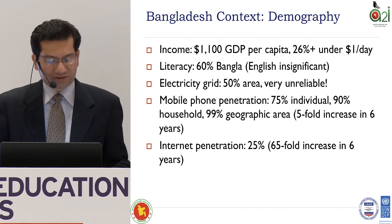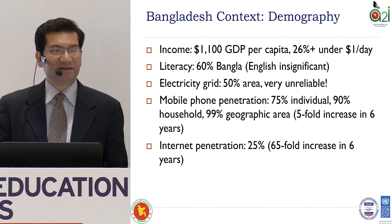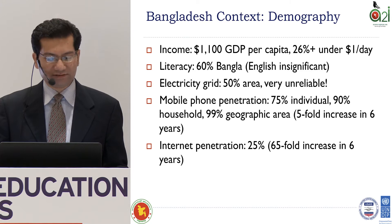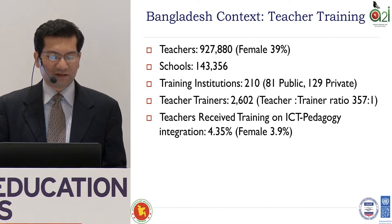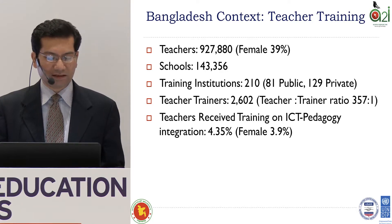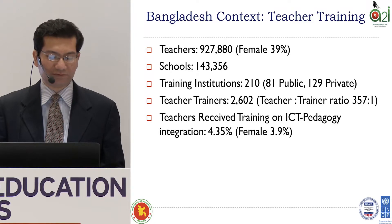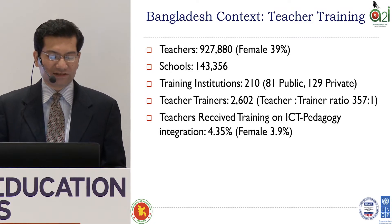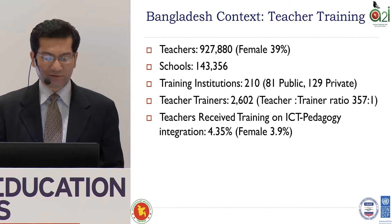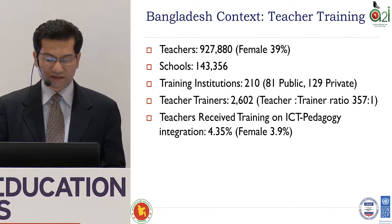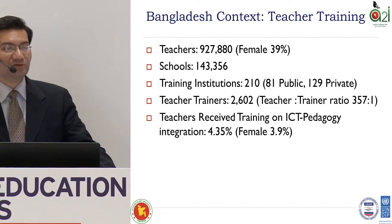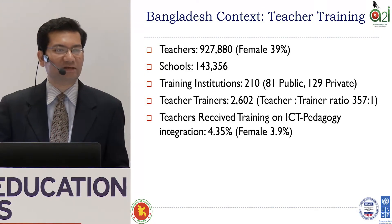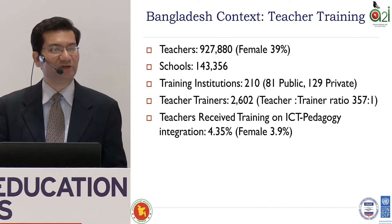We have over 900,000 teachers, a very large system, about 39% female teachers. We have over 143,000 schools, mostly primary schools — over 80 to 90,000 are actually primary schools. Teacher training institutions number about 210, 81 public and the rest private. If you look at the teacher-to-trainer ratio, it's actually quite alarming: 357 teachers to one trainer.